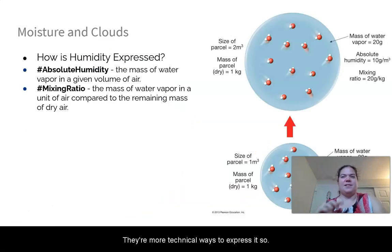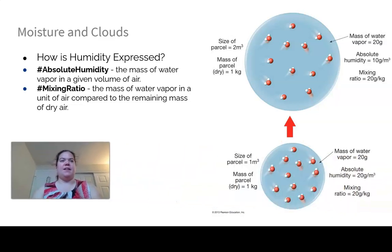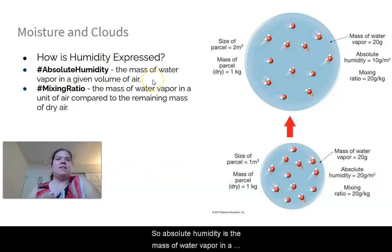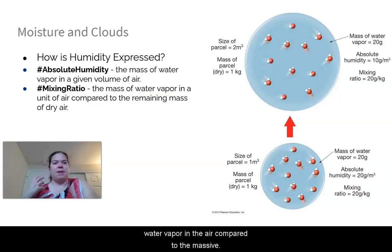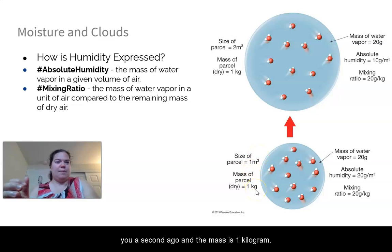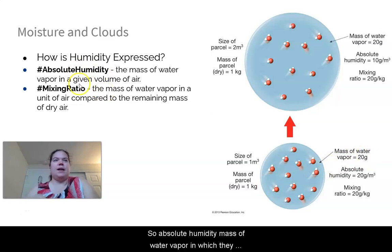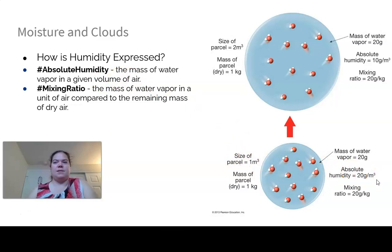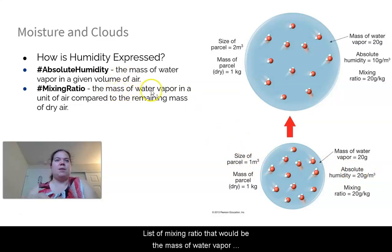There are more technical ways to express humidity. Absolute humidity is the mass of water vapor in a given volume of air. Mixing ratio is the mass of water vapor compared to the mass of dry air. For example: a one-meter-cube parcel with a total mass of one kilogram and 20 grams of water vapor gives an absolute humidity of 20 grams per meter cubed.